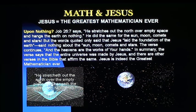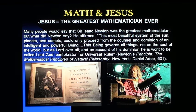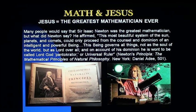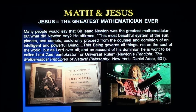A lot of people would say maybe Sir Isaac Newton was the greatest mathematician. But what did Isaac Newton himself say? I'm quoting from his Principia: 'This most beautiful system of the sun, planets, and comets could only proceed from the counsel and dominion of an intelligent and powerful being. This being governs all, not as the soul of the world, but as Lord over all. And on account of his dominion, he is wont to be called Lord God, Pantocrator, or Universal Ruler.'